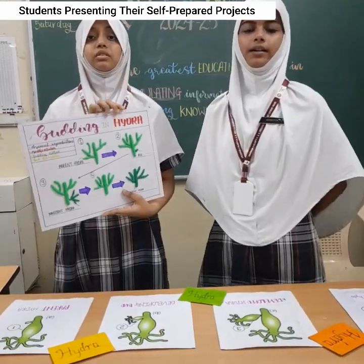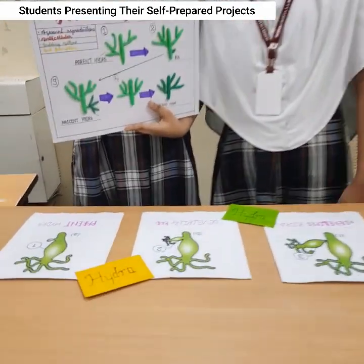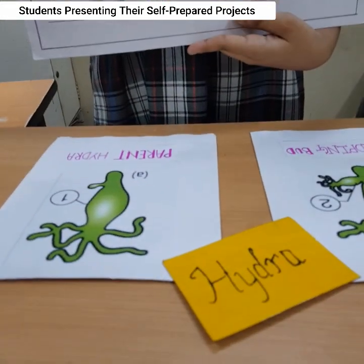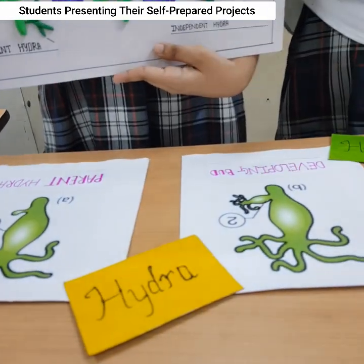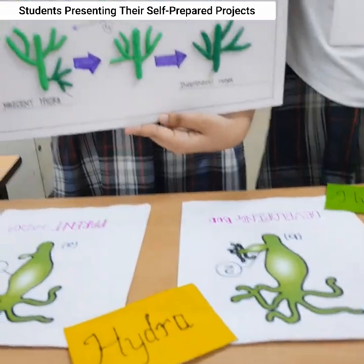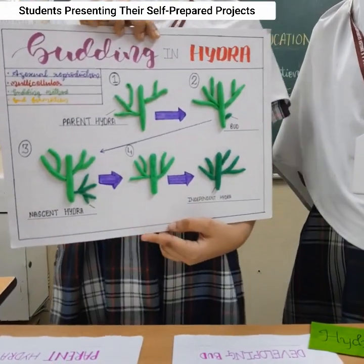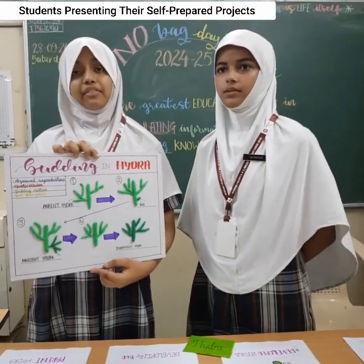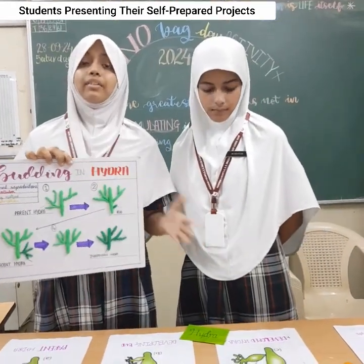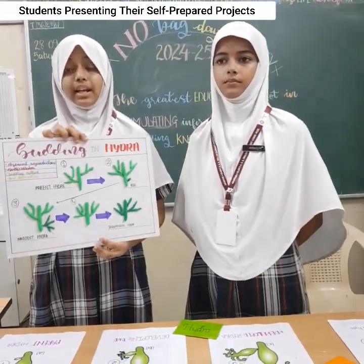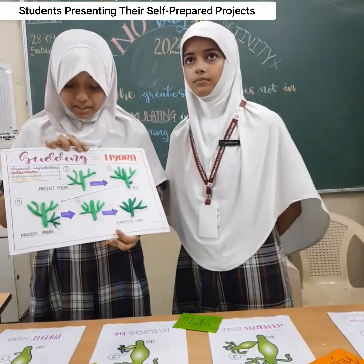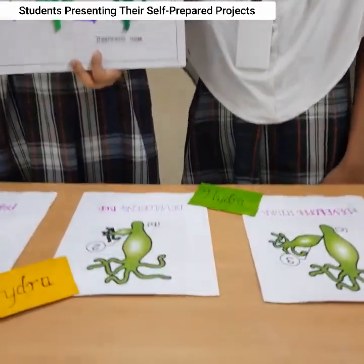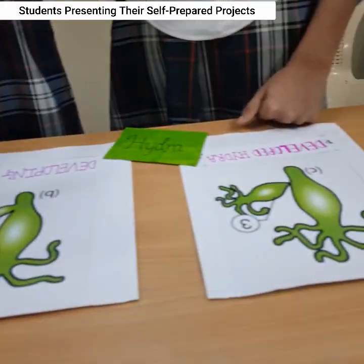The parent Hydra is under favorable conditions and an outgrowth is formed. That outgrowth is formed as a bud. The bud grows progressively and finally forms a nascent Hydra. Whatever nutrition the parent Hydra gets, it supplies an equal amount of nutrition to the nascent Hydra for its growth.